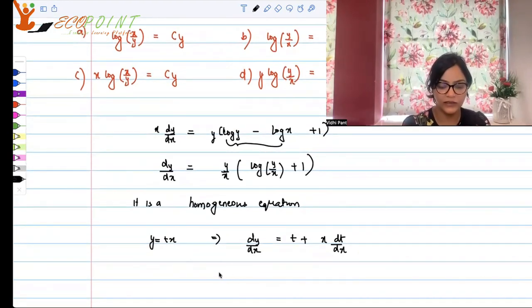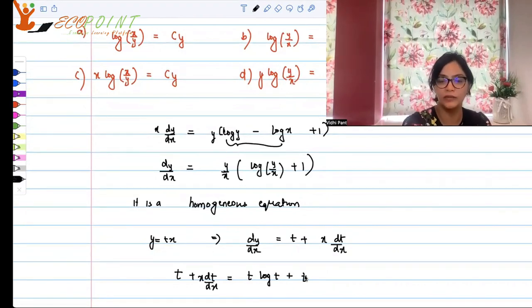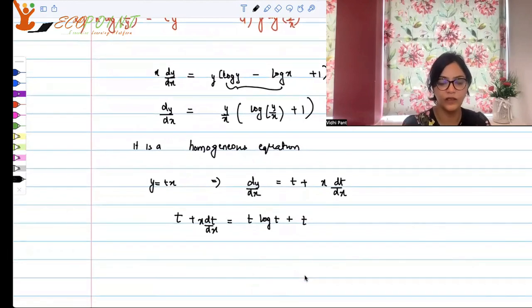And this means t plus x dt by dx is equal to t log t, because originally it is y by x log y by x. So t log t plus t, opening that bracket, right?